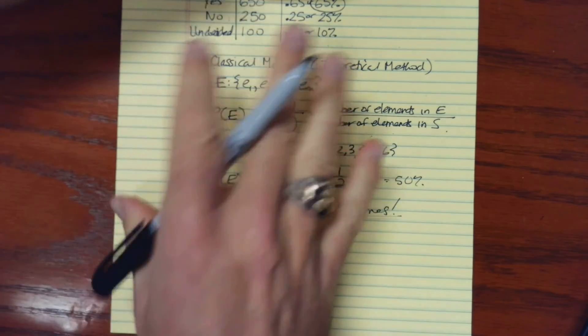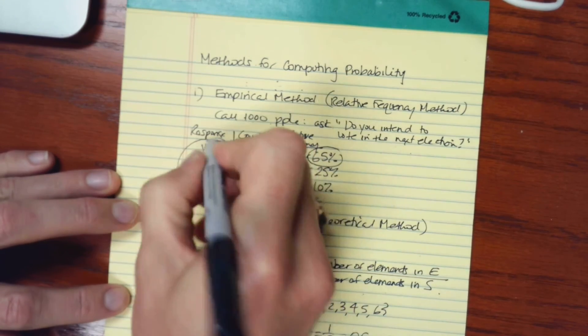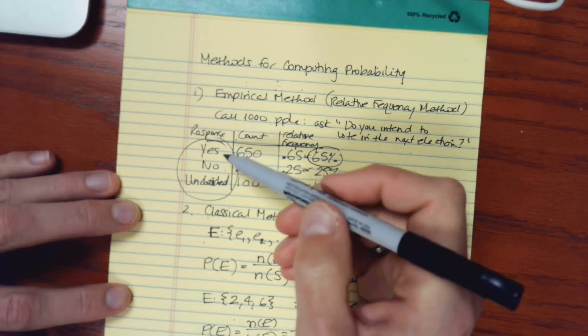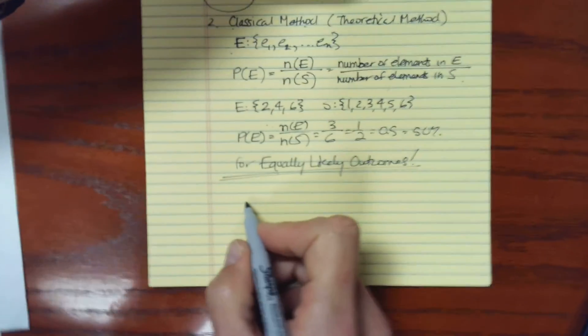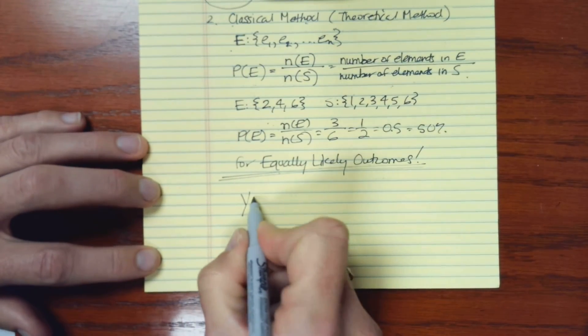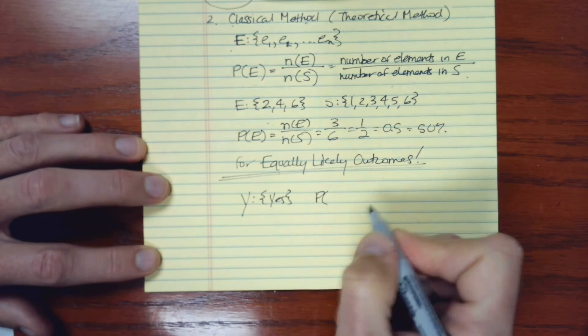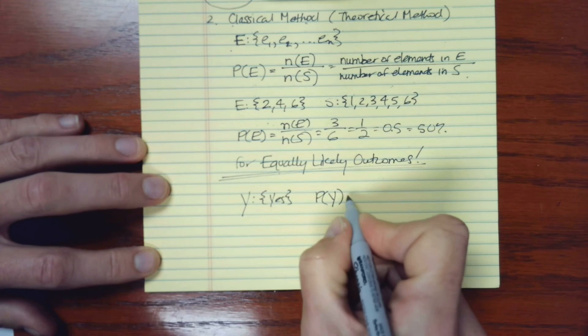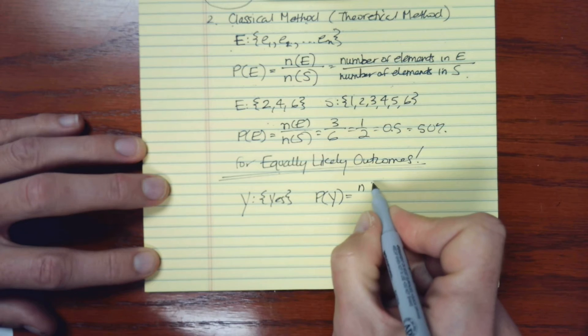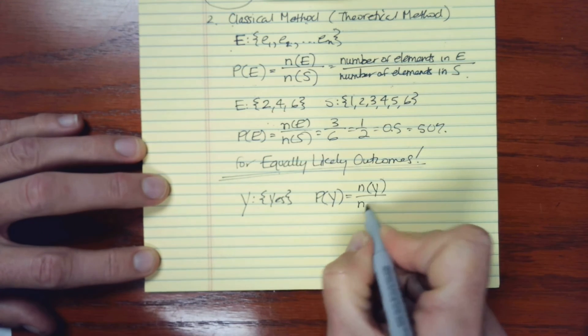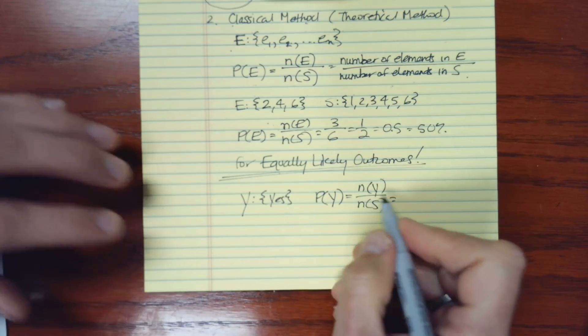If we go to the previous example, I said there are three outcomes here. This person could reply yes, no, or undecided. Maybe I'm going to call an event Y, and that's the event that I get the response of yes. I'm interested in the probability of Y, or the probability of a yes. I might attempt to use this method of saying, well, the number of elements in my sample space. There was one response in this collection, just the response yes, so that's one thing there.